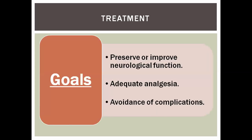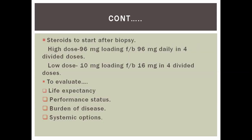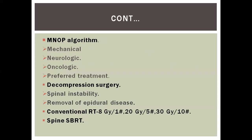The goals of treatment are to preserve or improve neurological function, achieve pain control, and avoid complications arising from this condition. The first step after histological diagnosis is to start steroids. Low-dose steroids: 10 mg loading followed by 60 mg in four divided doses at six-hourly intervals. Further steps depend on the patient's life expectancy, performance status, burden of disease, and systemic condition. We follow the MNOP algorithm: Mechanical, Neurologic, Oncologic, and Preferred treatment.